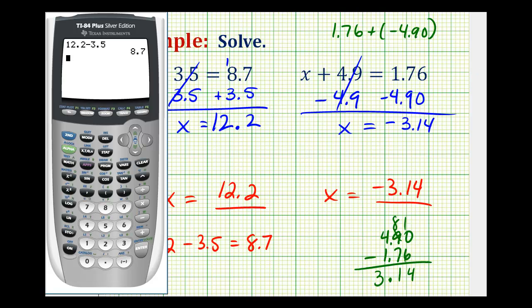Let's go ahead and check this one as well. We want to make sure that negative 3.14 plus 4.9 is equal to 1.76, and it is.